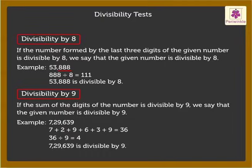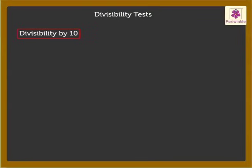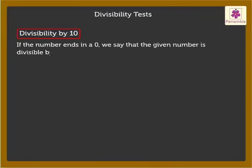Let us look at divisibility by 10. If the number ends in a 0, we say that the given number is divisible by 10. For example, 8,620 ends in 0. Thus, it is divisible by 10.